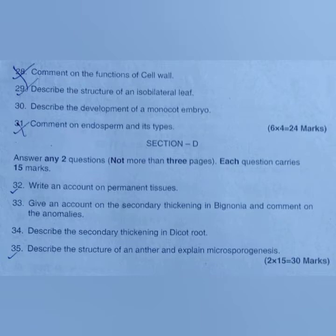Section D. Answer any two questions, not more than three pages. Each question carries 15 marks. 32. Write an account on permanent tissues. 33. Give an account on the secondary thickening in Bignonia and comment on the anomalies. 34. Describe the secondary thickening in dicot root. 35. Describe the structure of an anther and explain microsporogenesis.